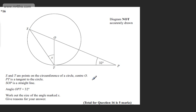This is question number 16. It's worth 5 marks and it's an asterisk question. We're told S and T are points on the circumference of a circle, centre O.